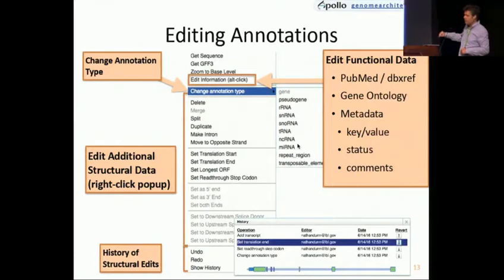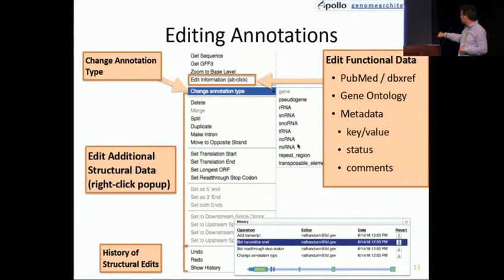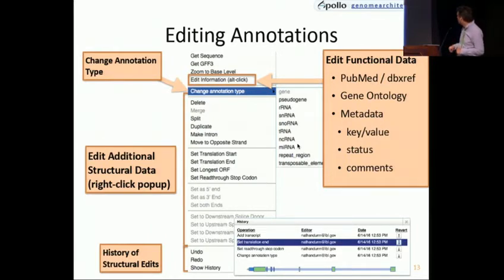Just a few other features. When you're doing structural and functional edits, once you've annotated, you may discover later that the type is incorrect. You can actually go through and change that type, and you can undo your change of type. In terms of functional data, we have a very loose schema — you can add a lot of different types of metadata, including PubMed references and GO annotations.